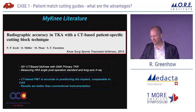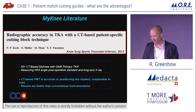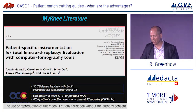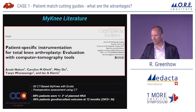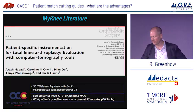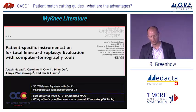Peter Koch, out of Switzerland, published 300 CT-based MINIs, looking at standard and long-leg radiographs and compared his results to the literature on CAS and conventional, showing the patient-matched technology was accurate. And then a study out of Australia looked at 50 CT-based MINIs — they did post-operative CT scans on all of them. Ninety-eight percent were within three degrees of planned alignment. Looking at individual components — femur and tibia, sagittal, coronal, and rotational alignment — they ranged from 90 to 100 percent accuracy.